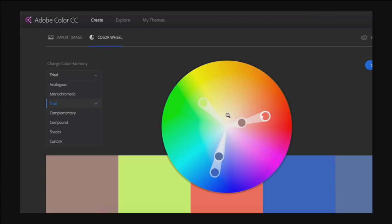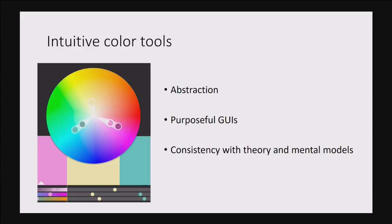Adobe Color is a tool to create color themes — you can move the color swatches around and it enforces different harmonic schemes. It's very easy to start from scratch and create something compelling. What I like about this tool is it shows the most important features for intuitive color tools: it provides the right level of abstraction so interaction is greatly simplified, it has a purpose tailored to a final application, and it's consistent with theory and the mental models users have when working with color.